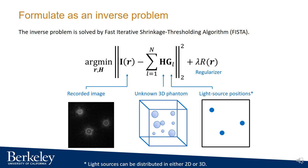To solve this unknown refractive index, we formulate this problem as an inverse problem. In this equation, I refers to the image recorded by the camera, which contains only intensity but not phase of the light field. H is the unknown 3D phantom to be reconstructed. Gl is the position of each light source. Here, we have three light sources, so L is from 1 to 3. We solve this inverse problem by the FISTA algorithm.